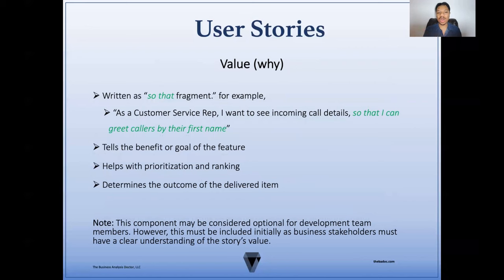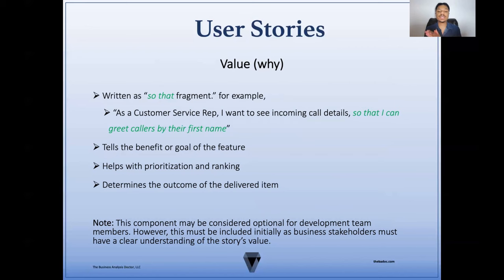Then we have our value, or why. This is typically written as a 'so that' fragment. For example, 'as a customer service rep, I want to see incoming call details so that I can greet callers by their first name.' This tells us the benefit or goal of the feature. It also helps with prioritization and ranking and determines the outcome of the delivered item. This component may be considered optional for the development team members only; however, it must be included initially as business stakeholders must have a clear understanding of the value of each story.